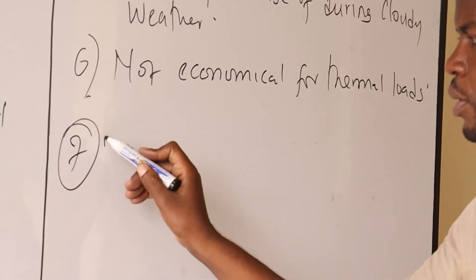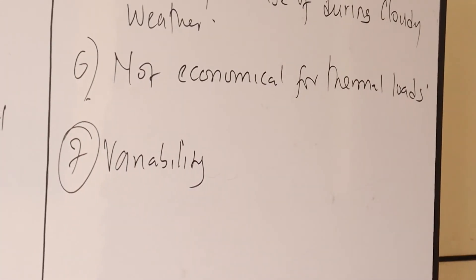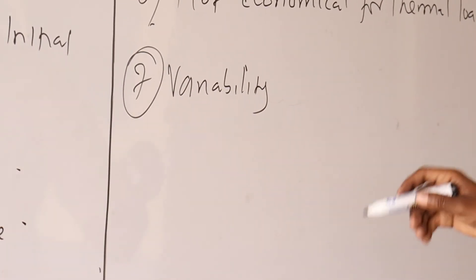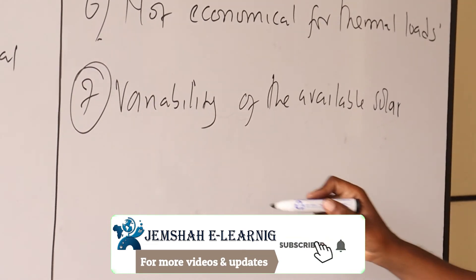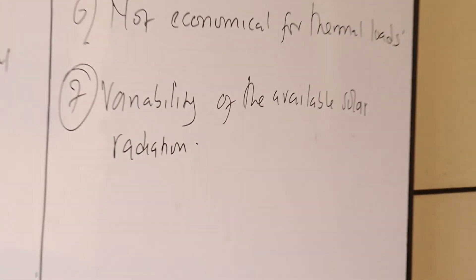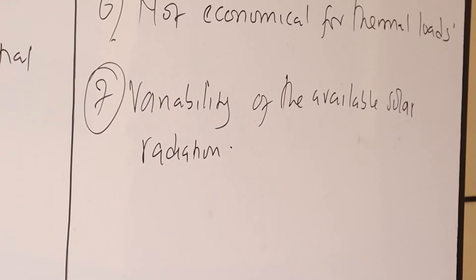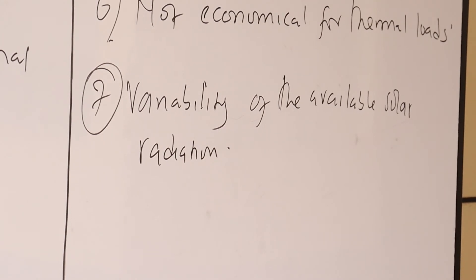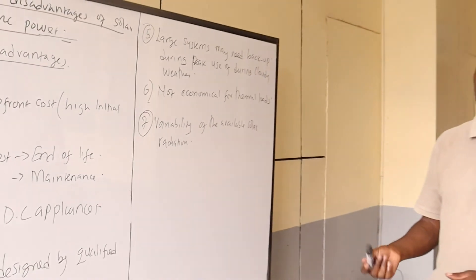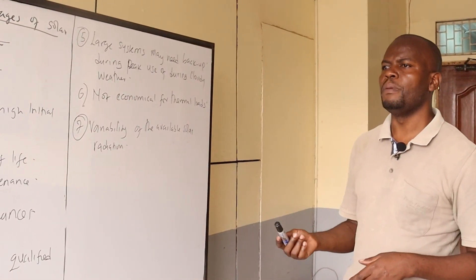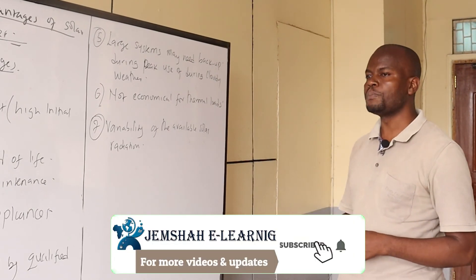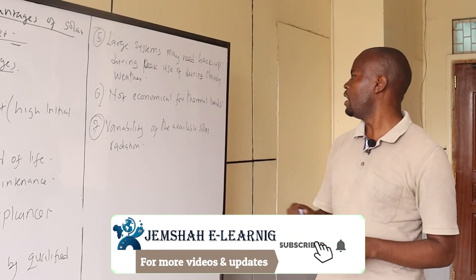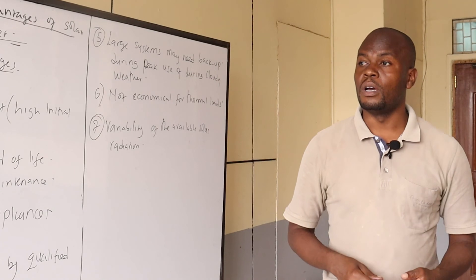Another disadvantage is the variability of the available solar radiation. Variations in climate and weather greatly affect the power output of any solar-based energy system. During cloudy weather, there will be little or low insolation, which will eventually affect the output of the modules, resulting in variability in power output.